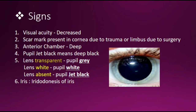Signs of Aphakia: visual acuity is decreased; scar mark present in cornea due to trauma, or at the limbus due to surgery; anterior chamber is deep; pupil is jet black, meaning deep black. If the lens is transparent, the pupil appears gray; if the lens is white, the pupil appears white; and if the lens is absent, the pupil is jet black. Iridodonesis of the iris is seen — iridodonesis means vibration of the iris with eye movement.